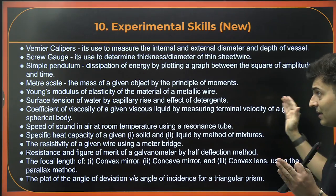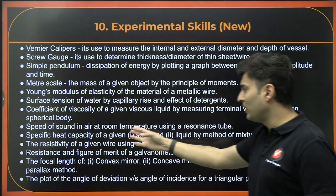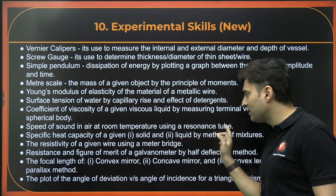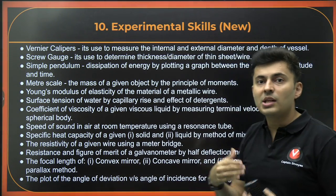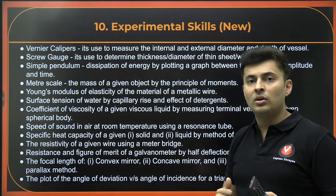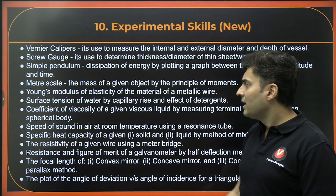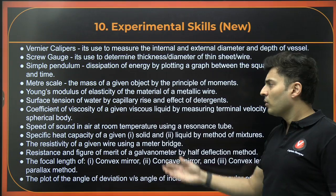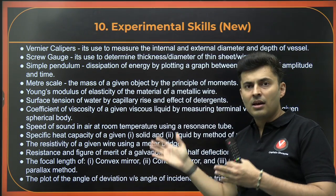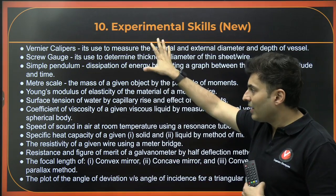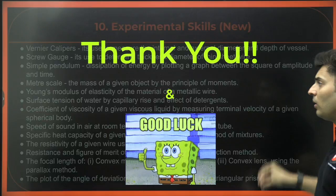Experimental Skills is something new — but these are part of all the other chapters, not a separate chapter. For example, speed of sound in air at room temperature using a resonance tube is part of sound and is usually taught along with that chapter. Vernier caliper and screw gauge are generally taught at the beginning with units, dimensions, and error. Young's modulus is taught with solid mechanics. Coefficient of viscosity and terminal velocity are taught with the viscosity chapter. All these things are now explicitly mentioned, so expect a few questions from this particular part, but do not consider it a new chapter.